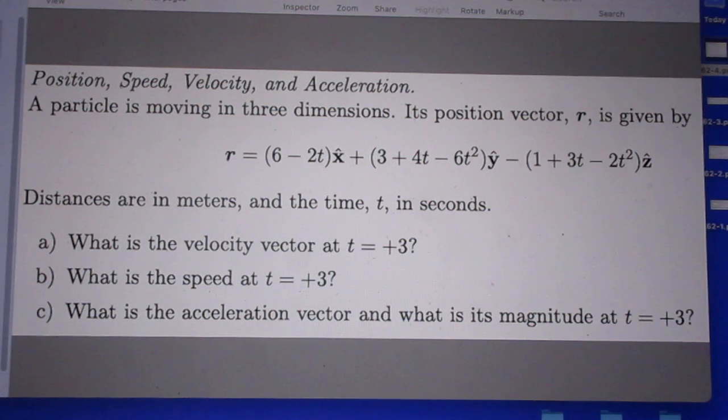It's really a simple high school problem. The position r is a vector with x, y, and z components. You have to calculate the velocity, which means taking the first derivative, then calculate what that velocity is at t equals 3, and what the speed is. The third question is the acceleration, which is the second derivative of r. If you're ready, here comes the solution.